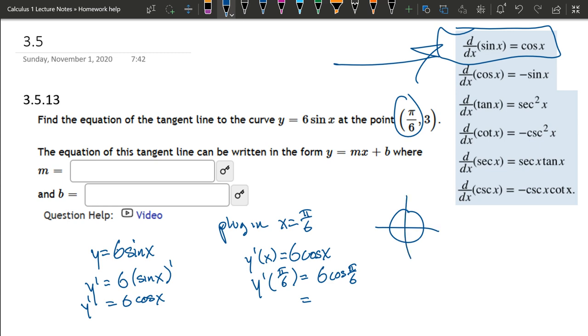We have 6cos(π/6). I like to draw the unit circle—π/6 is the first stop right here. Hopefully you have these memorized or written down. In the first quadrant, this coordinate is (√3/2, 1/2), and cosine is the x-value. So 6 × √3/2, and 6 divided by 2 is 3, giving us 3√3.